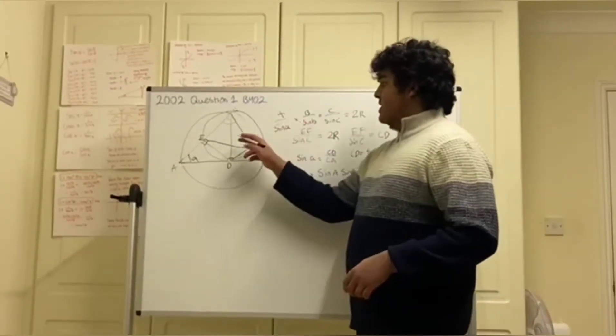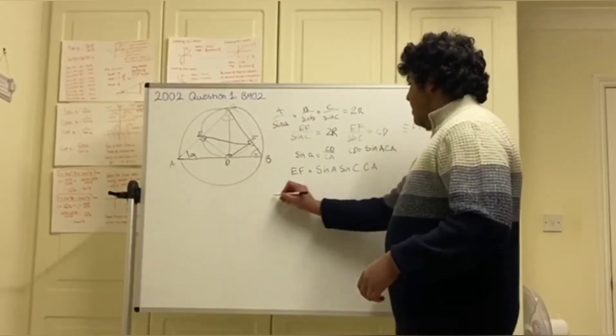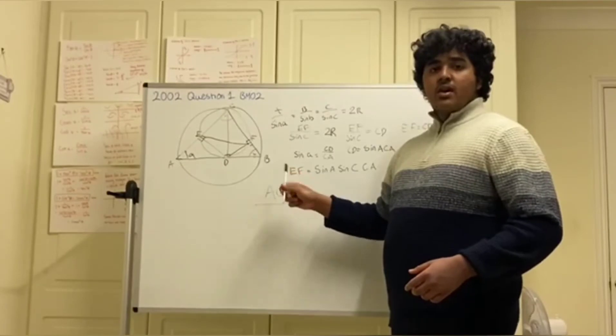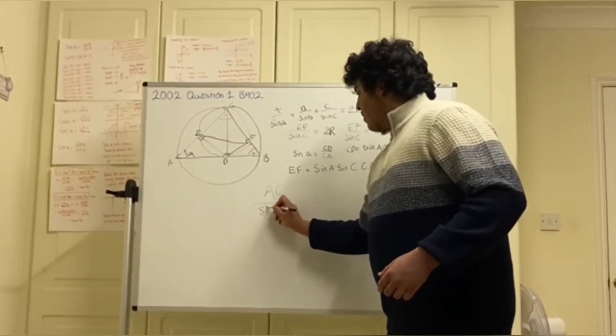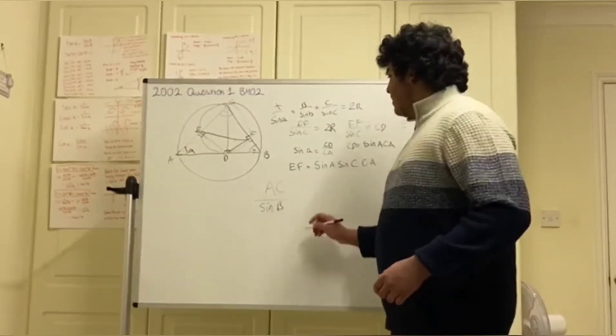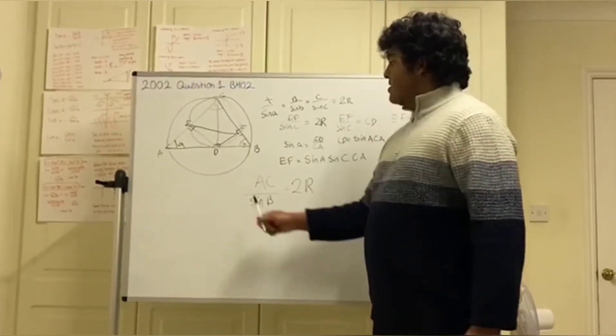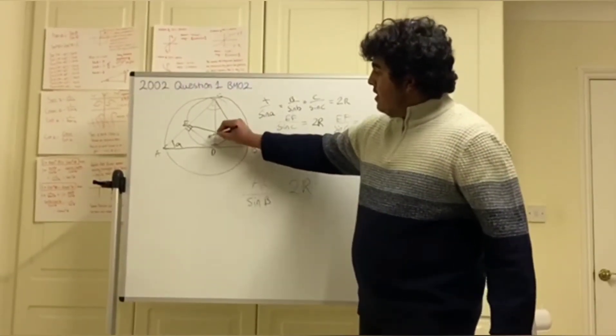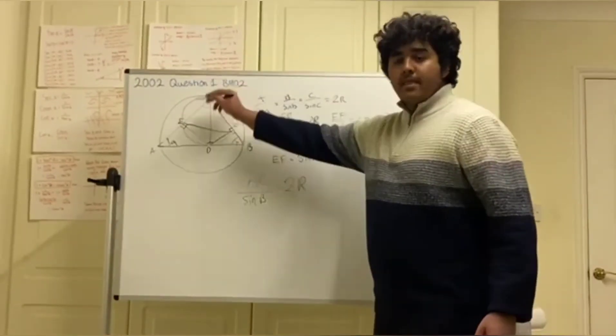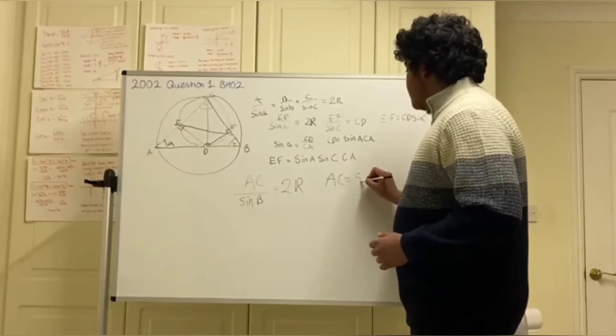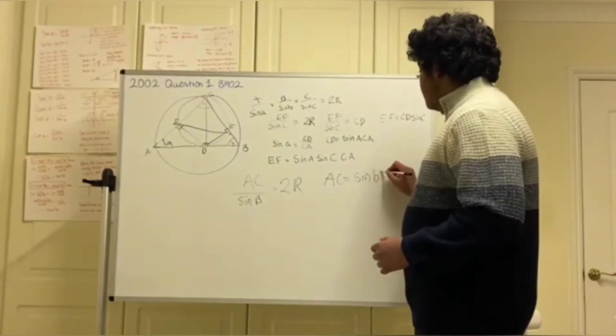And that will give us that AC over the opposite angle, sin B, equals we'll take the 2R, which is R as the radius of this circumcircle here. Now we can write AC equals sin B times 2R.